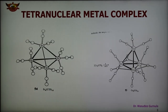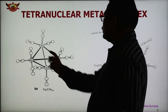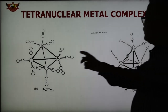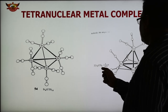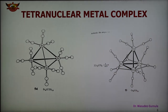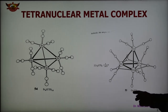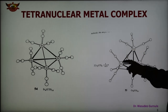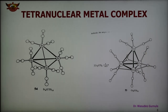More tetranuclear metal complexes are the carbonyl metal clusters. The structure of Ir4(CO)12 is shown, with 4 iridium atoms and 12 carbonyl ligands. Another example is Co4(CO)12, tetracobalt dodecacarbonyl, formed by heating Co2(CO)8 with loss of 4 CO. In Co4(CO)12, both bridging and terminal carbonyl groups are present. These two structures — Ir4 and Co4 — are examples of tetranuclear metal clusters with carbonyl ligands.